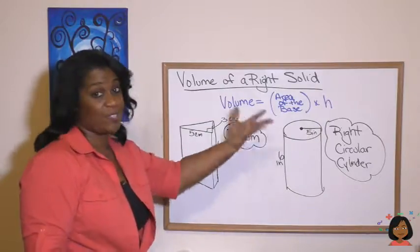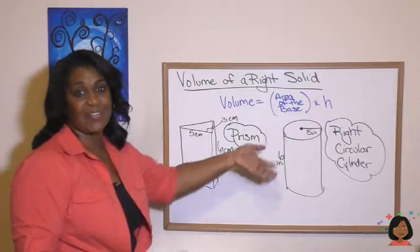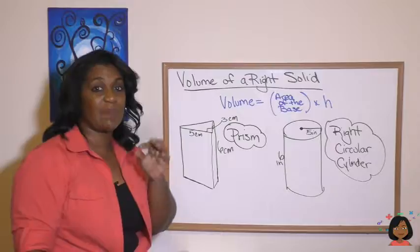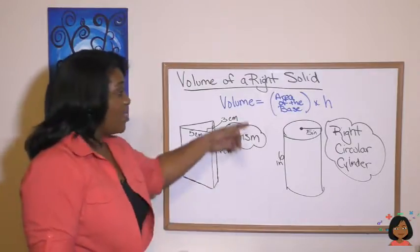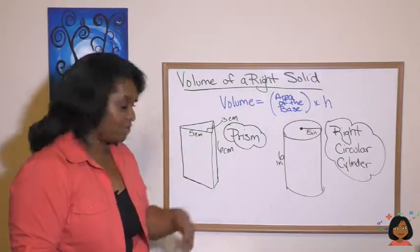But if we have a circle instead of a polygon, we call that a cylinder. And here we have a right circular cylinder. Let's see if we can apply the same formula about volume to both of them. And that volume is the area of the base times the height.